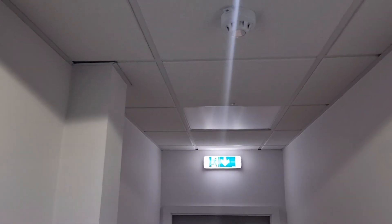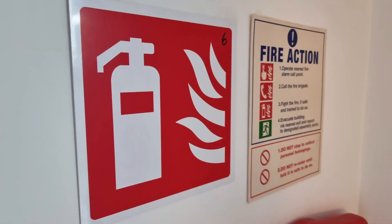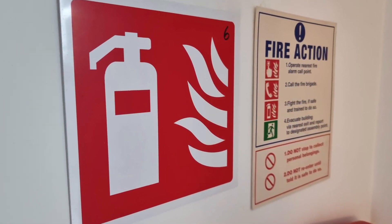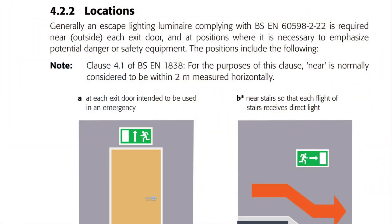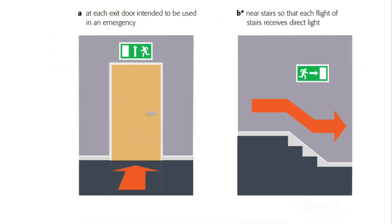While you won't necessarily install signs that aren't a luminaire, some signage will be incorporated into your emergency fittings, and signs that aren't luminaires still require a certain level of illumination on them. The guide then identifies locations where escape lighting luminaires will be required, under subheading 4.2.2. These positions include at each exit door intended to be used in an emergency.